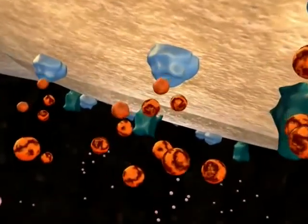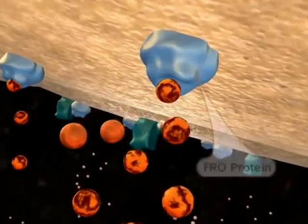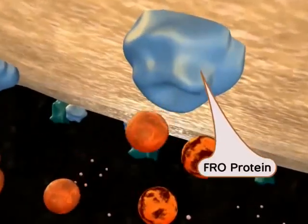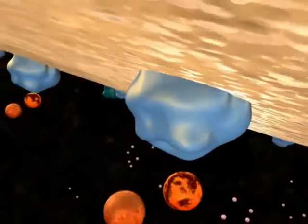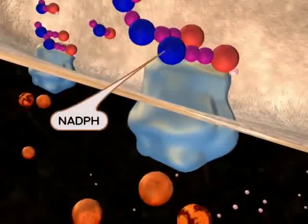Embedded in the cell membrane is a protein called FRO. FRO reduces ferric iron to ferrous iron at the root surface by transporting an electron from NADPH.